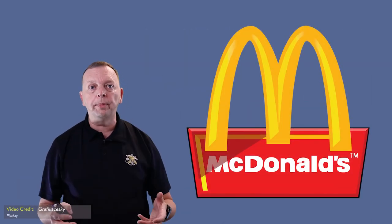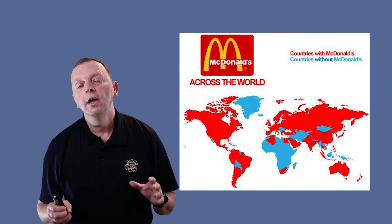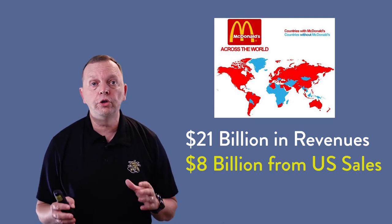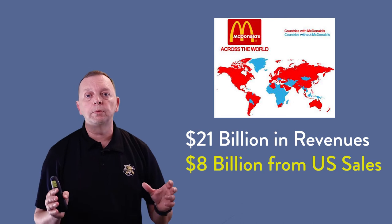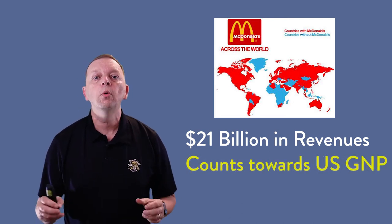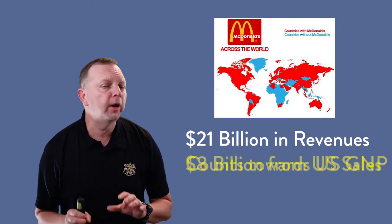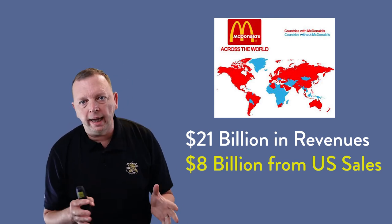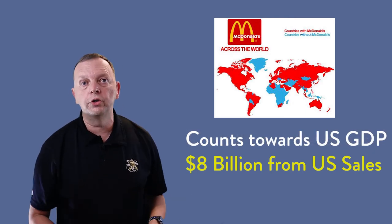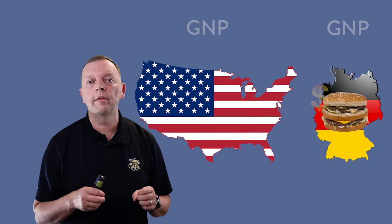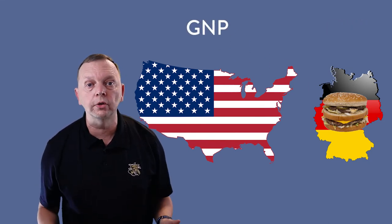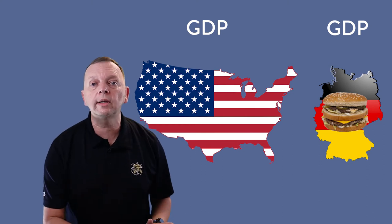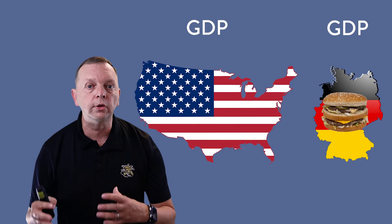For example, let's look at McDonald's, which is an American company but has restaurants in other countries. Of the over $21 billion earned in 2019, only about $8 billion was actually sold within the United States. For GNP, which counts all of the nation's businesses, all $21 billion of McDonald's revenues count towards the American GNP. However, for GDP, only those sales made in the United States — about $8 billion — count towards the American GDP. So the Big Mac sold in Germany counts as part of the American GNP, but not Germany's GNP, because McDonald's is an American company. But that same Big Mac does not count as part of the American GDP — it counts as part of the German GDP because it was sold in Germany.